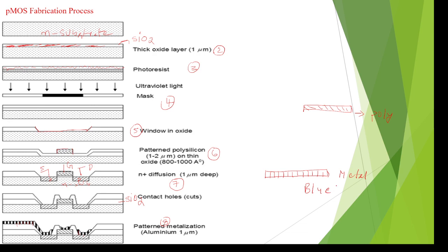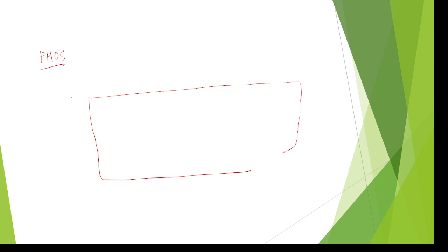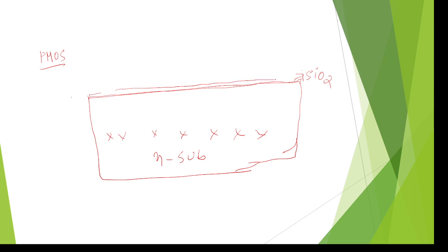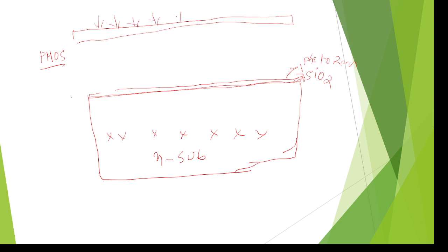Metal color is blue. To summarize: the first step is to take an N-substrate which has electrons. In the second step, the total surface is covered with a silicon dioxide layer for protection. In the third step, deposit a photo resist layer for an even surface. In the fourth step, pass UV light and stop it with a mask where diffusion is not required.